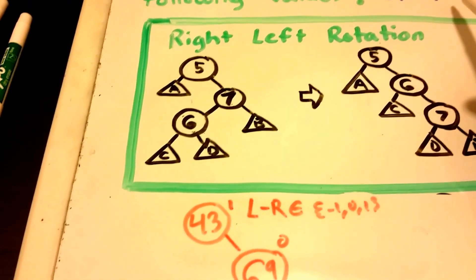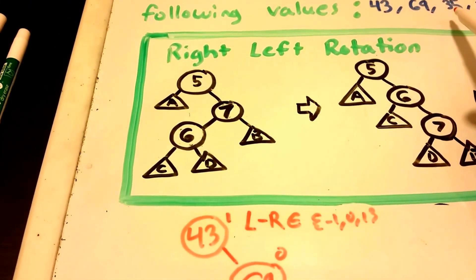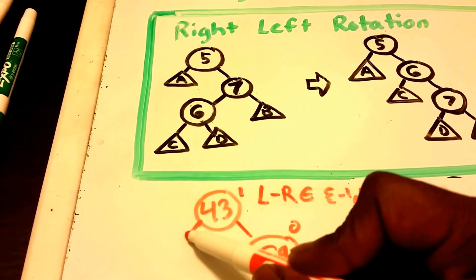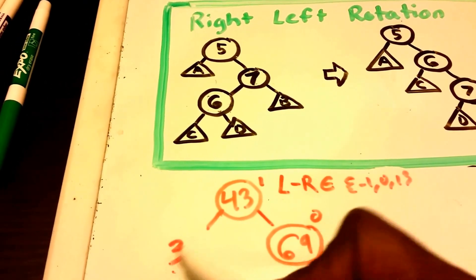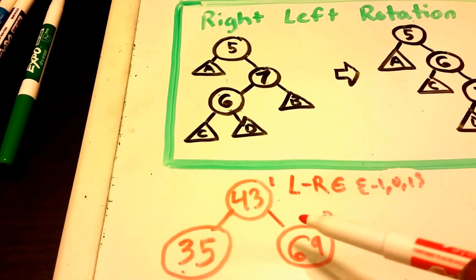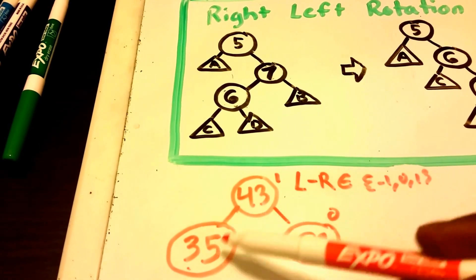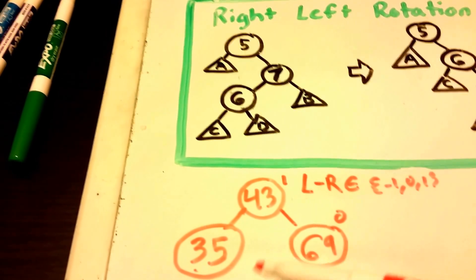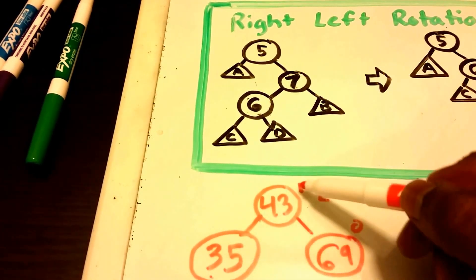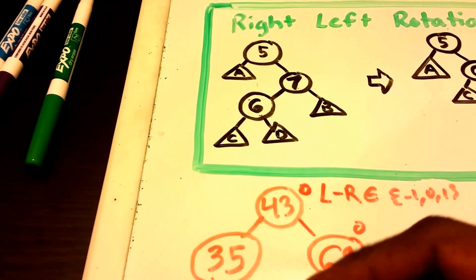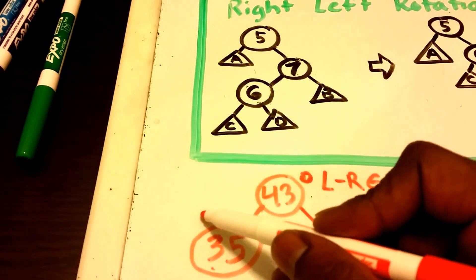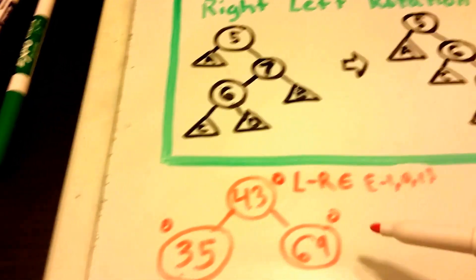Next let's insert the value 35. 35 is less than 43, so it's going to go to the left. We insert 35 and check our balance factor. The height of the left subtree minus the height of the right subtree is zero at the root. There is no left or right subtree for 35, so the balance factor is zero. Our tree is balanced.